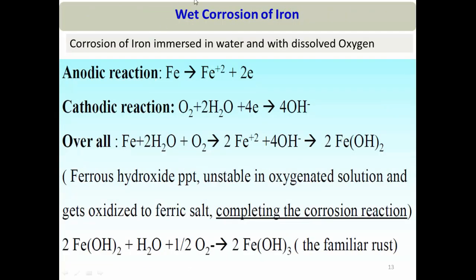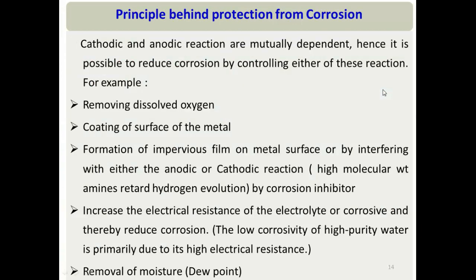As an example, consider iron immersed in aerated water. The anodic reaction is iron oxidation; the cathodic reaction in neutral medium produces hydroxide ions. The hydroxide ions react with Fe²⁺ to form Fe(OH)₂, which is unstable in oxygenated solution and converts to Fe(OH)₃ — which is rust. This is how iron corrodes by the electrochemical mechanism in a wet environment.